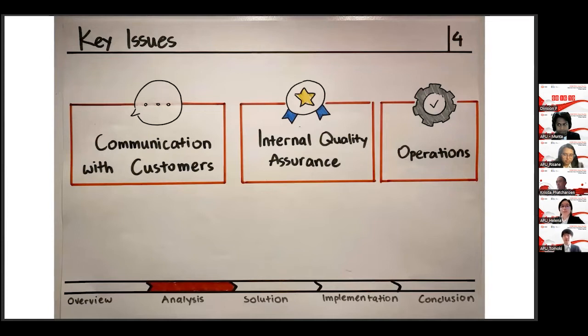Thank you, Tomo. So here are three key issues we identified in the case. First, communication with customers. Second, internal quality assurance. Lastly, operations. We'll be looking at them in more detail in the upcoming slides.